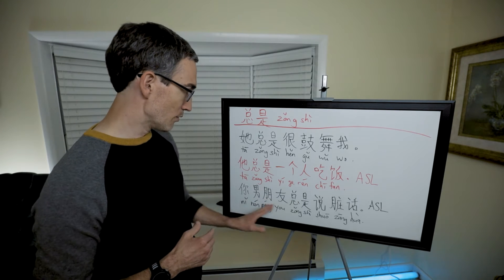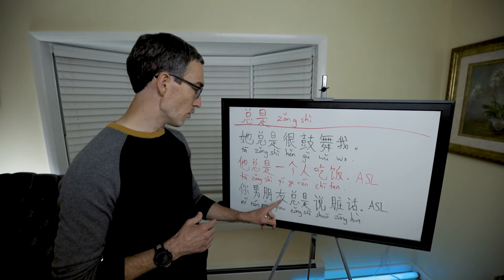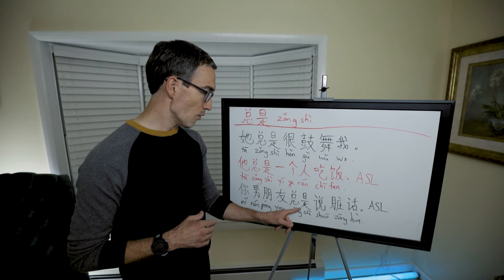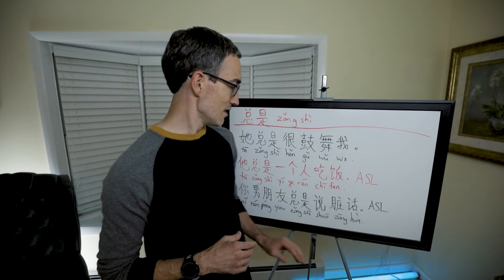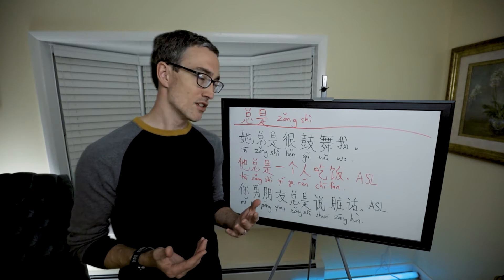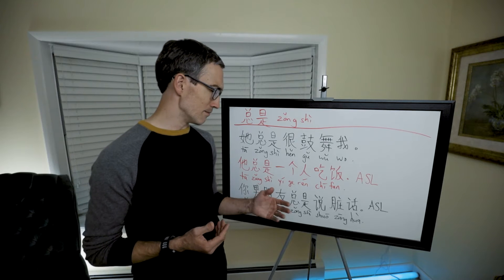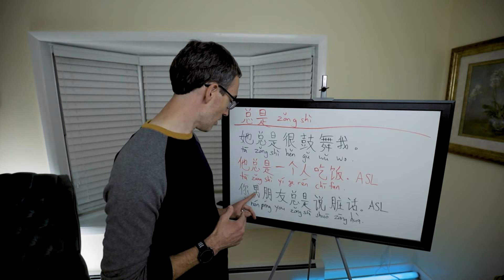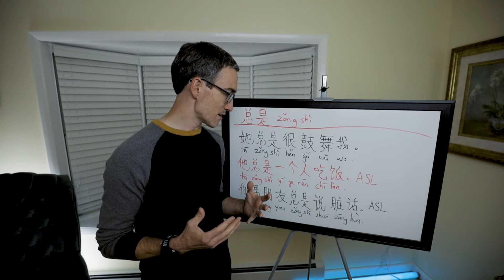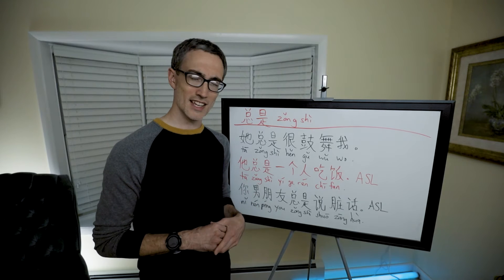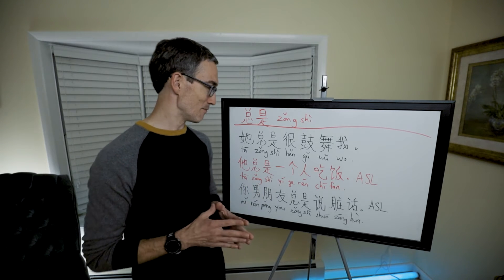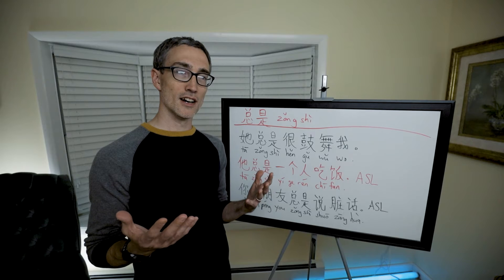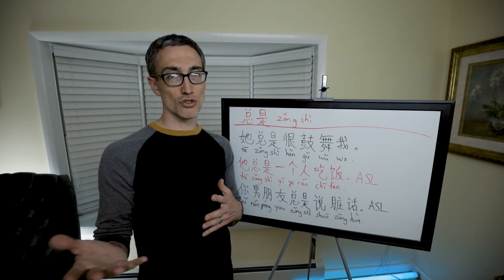Here we have another one, and this one's more negative. 你男朋友总是说脏话. Your boyfriend always speaks dirty language. So your boyfriend always talks dirty, or foul language. Your boyfriend always speaks foul language. That's from Allset Learning. Okay. So there's 总是. It's very flexible, positive, neutral, and negative.